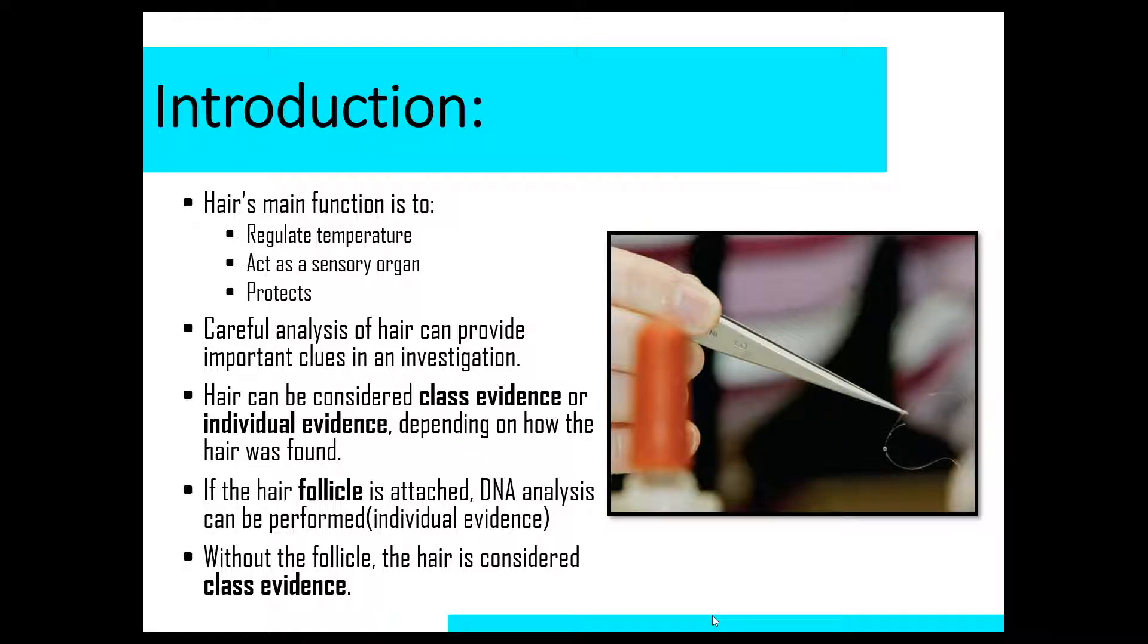Now hair can be complicated because it can be considered either class evidence or individual evidence depending on how it's found at the crime scene. Let me review with you from unit one. Remember, class evidence narrows down the suspect field to a group of people, whereas individual evidence can narrow down the suspect field to one individual person, which is extremely helpful. That's the goal.